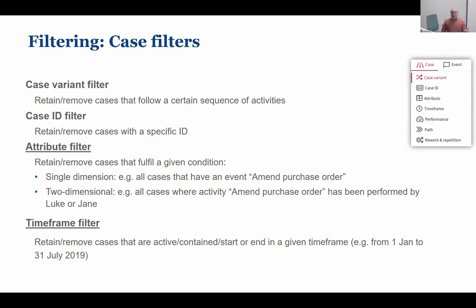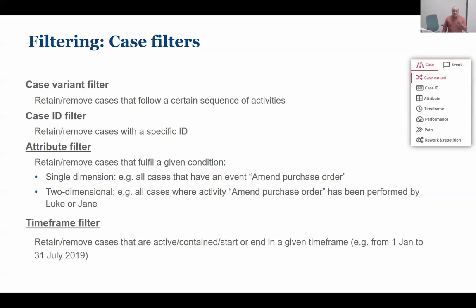For example, if I want to see all those purchase orders where there was an amendment of the purchase requisition, I use an attribute filter pointing to the amendment task. In a loan application handling process, sometimes there are tasks related to fraud assessment — the bank needs to know if you are going to be delinquent on your loan. You might want to look for all cases where the task 'investigate potential fraud' was executed.